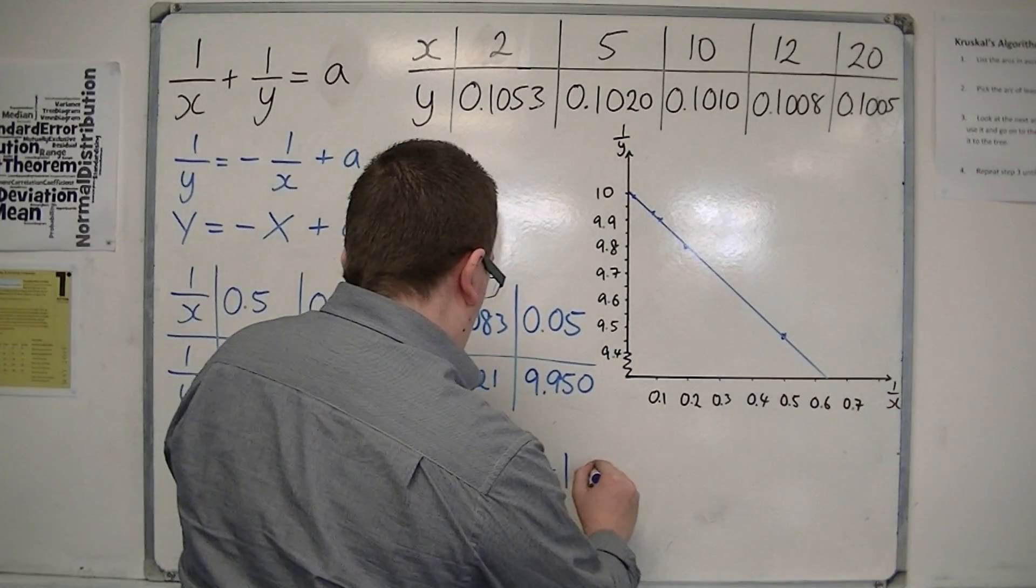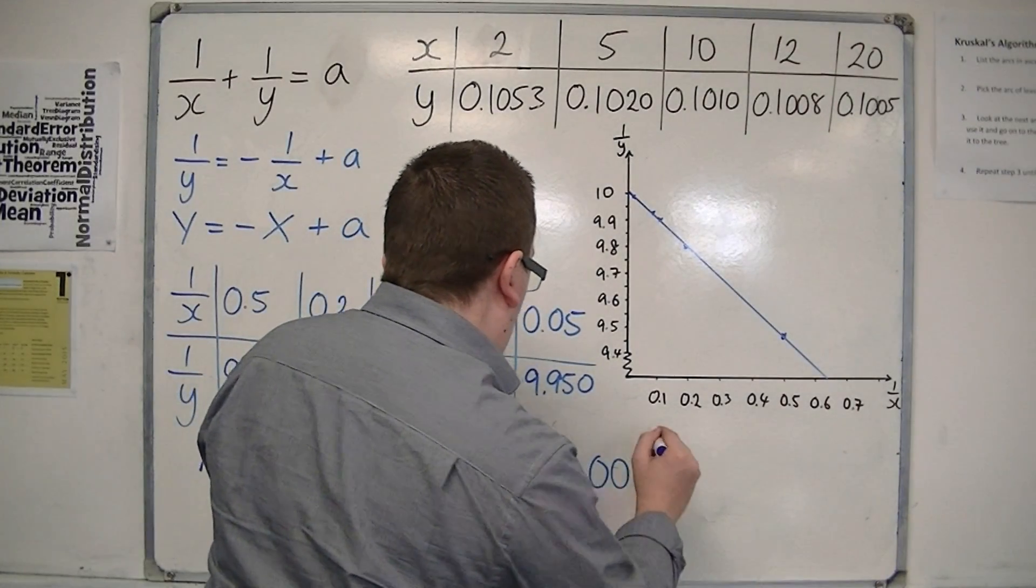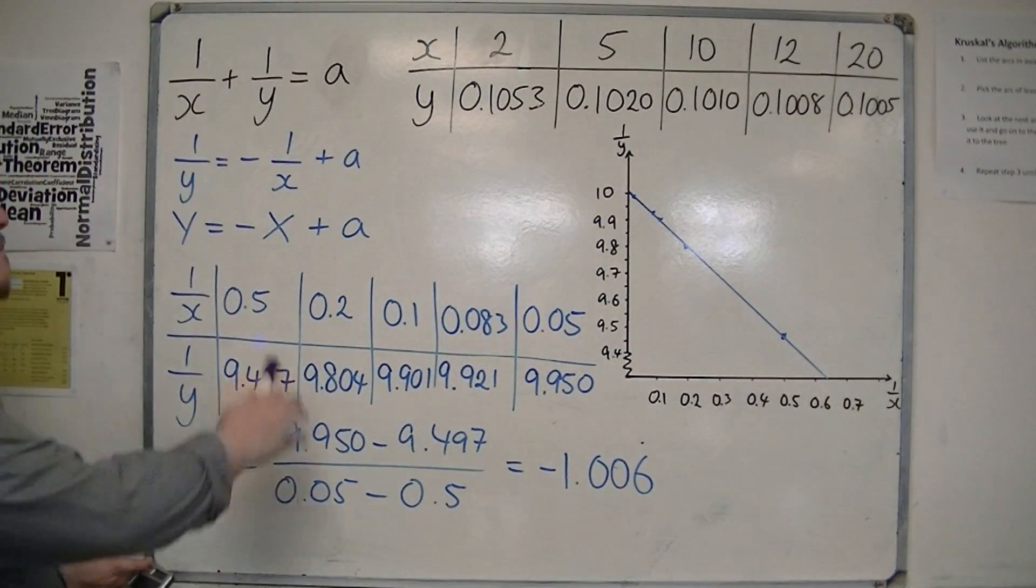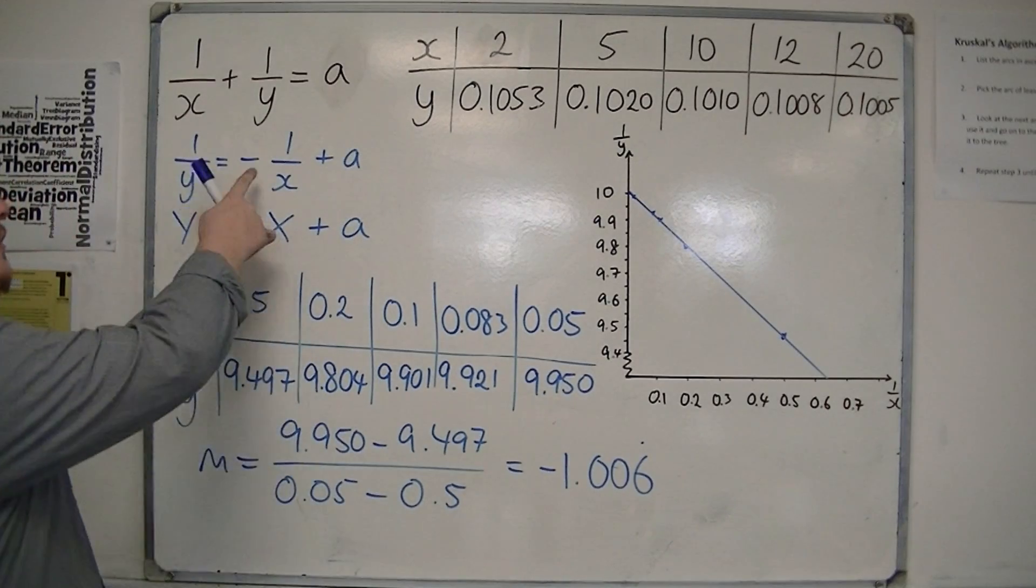We get minus 1.006 recurring. So, minus 1.006 recurring. So, very close to the minus 1 that I was expecting here.